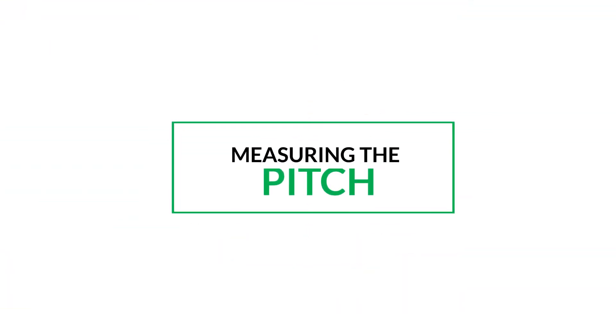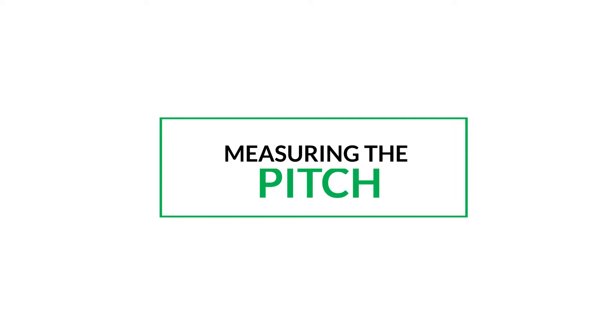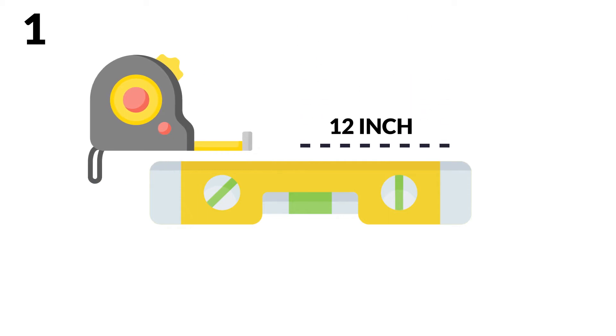Measuring the Pitch. To calculate the area of your roof, you'll need to first calculate the pitch. Step 1: Use your measuring tape to measure 12 inches on your large level and make a mark at the 12 inch line.